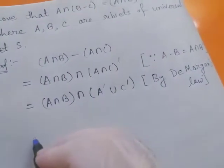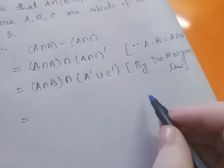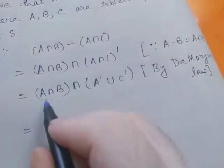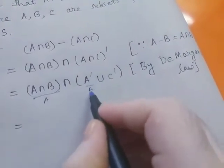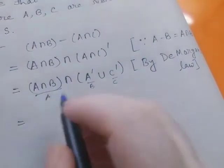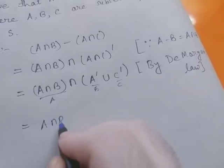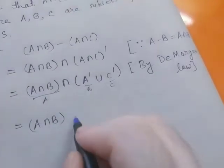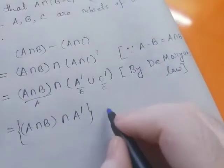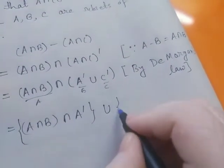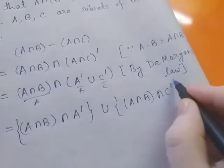Now we apply the distributive law. Suppose this is A, this is B, and this is C. Then we have: (A intersection B intersection A complement) union (A intersection B intersection C complement).